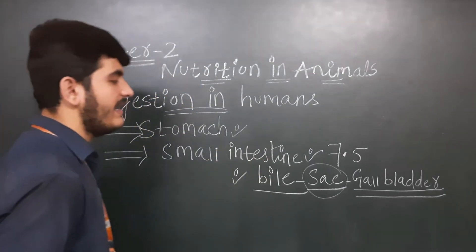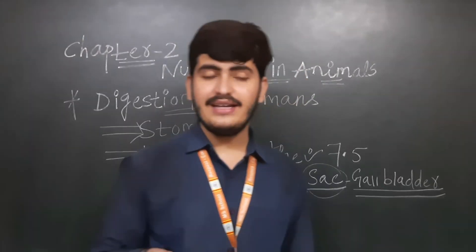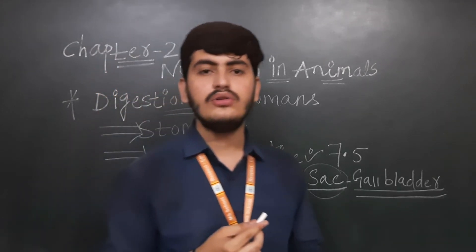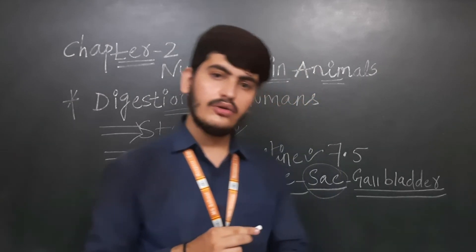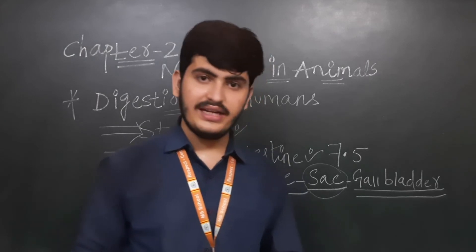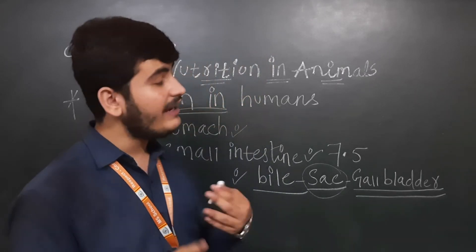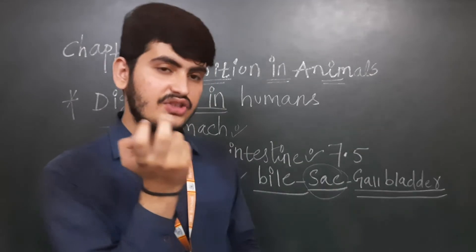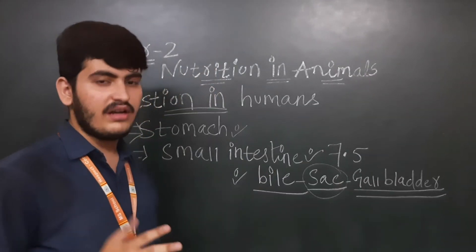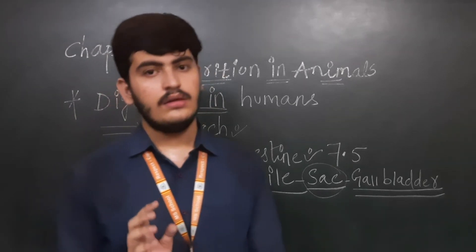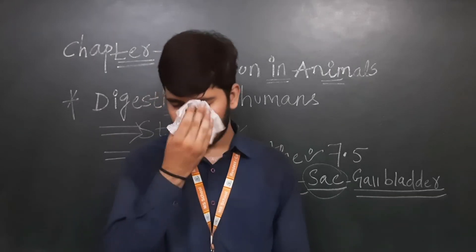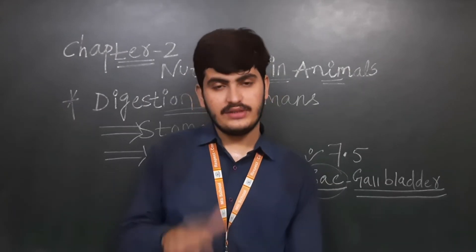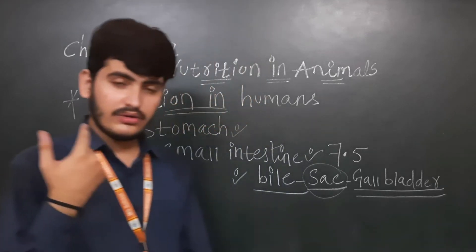Now the pancreas. The pancreas are large and cream-colored. They are located just below the stomach. The pancreatic juices act on carbohydrates, proteins, and fats, converting those complex substances into simpler ones. So the pancreas are large, cream-colored, located just below the stomach, and their juices convert carbohydrates, fats, and proteins from complex forms into simpler ones.